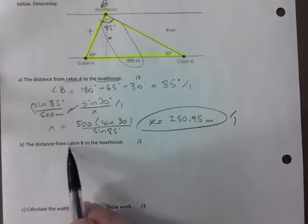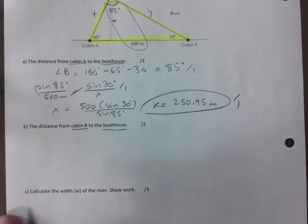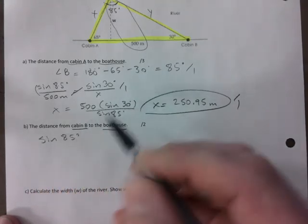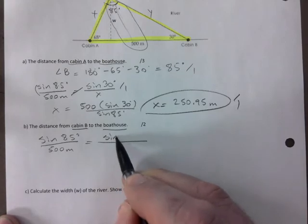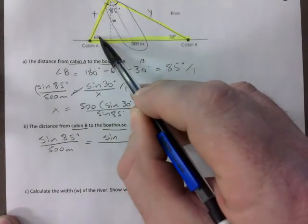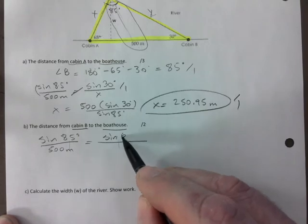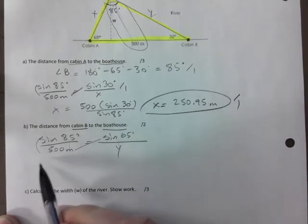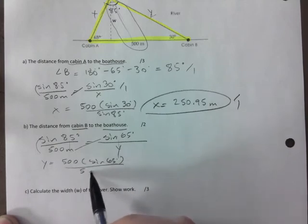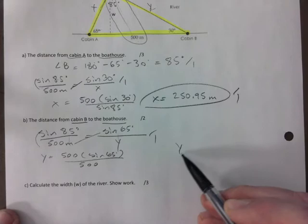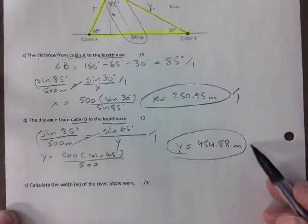Part b is asking the distance from cabin B to the boathouse. I'm going to call that y. Sine of 85 over 500, I'm using the pair that I've found again, equals sine of 65 over y. I'm interested in y, I have to use the angle across from it. Cross multiply and divide. One mark for setup and one mark for the correct final answer which is 454.88 meters.